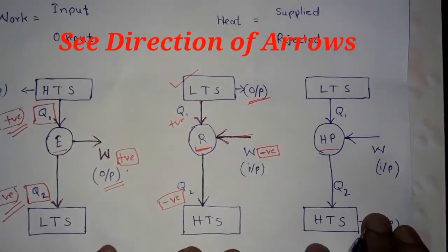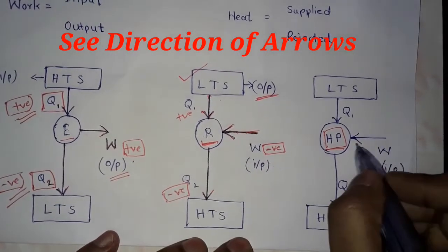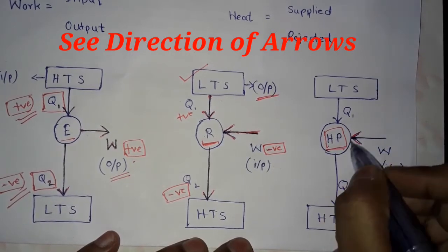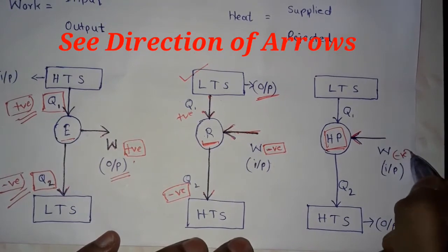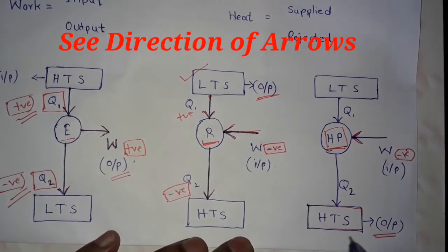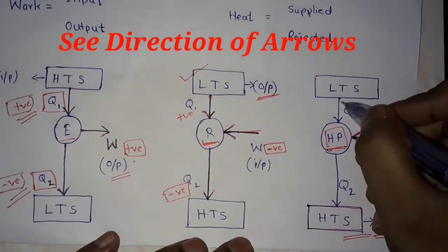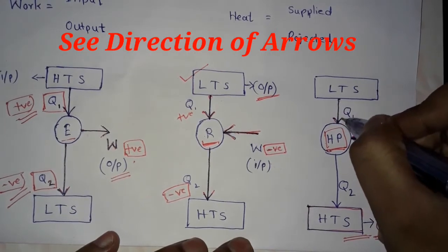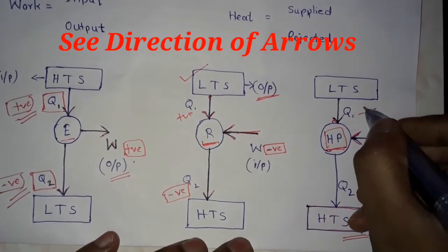In the case of a heat pump, work is done on the system, so it is a negative quantity. The output of a heat pump is high temperature at the source. See the arrow direction: heat supplied to the system is a positive quantity, and heat rejected from the system is a negative quantity.